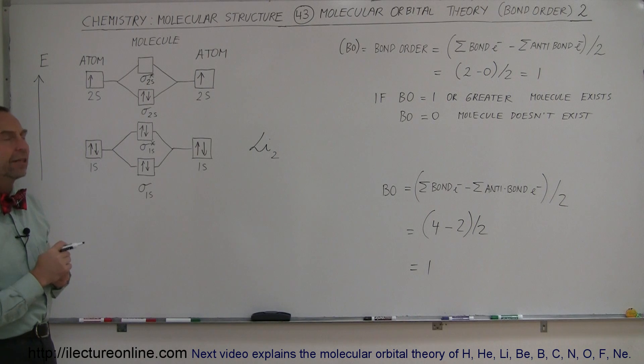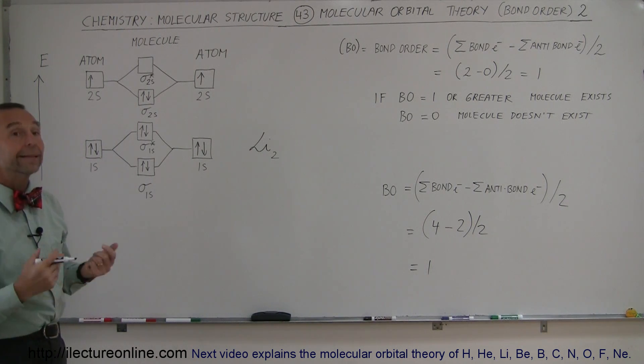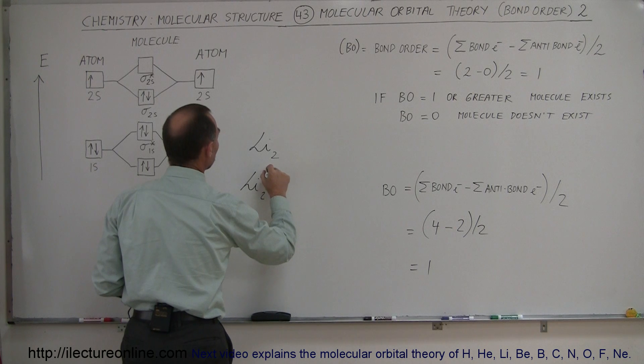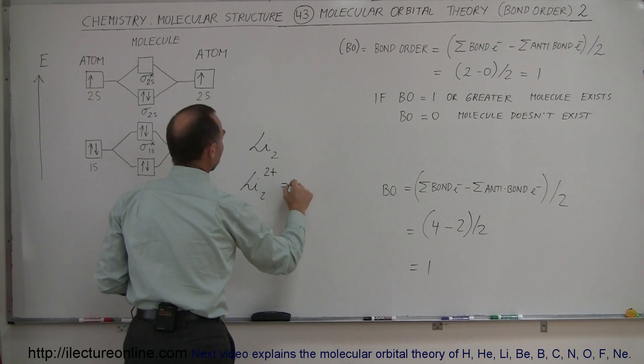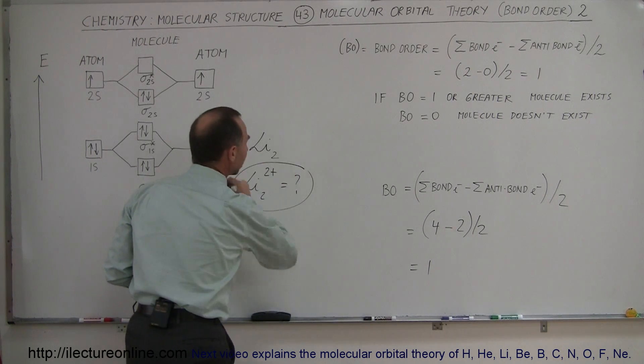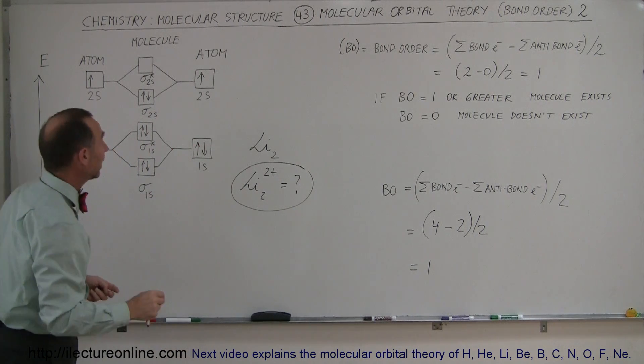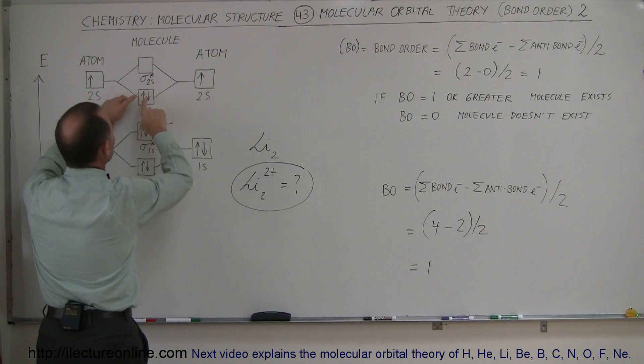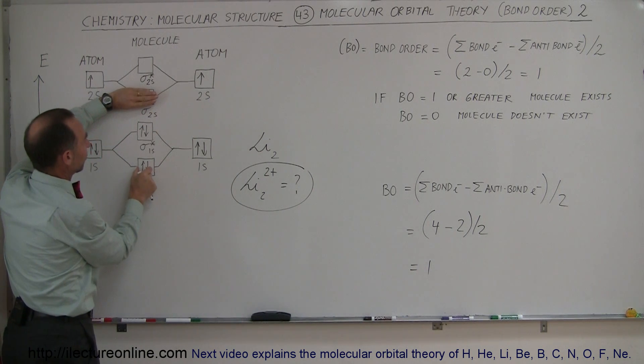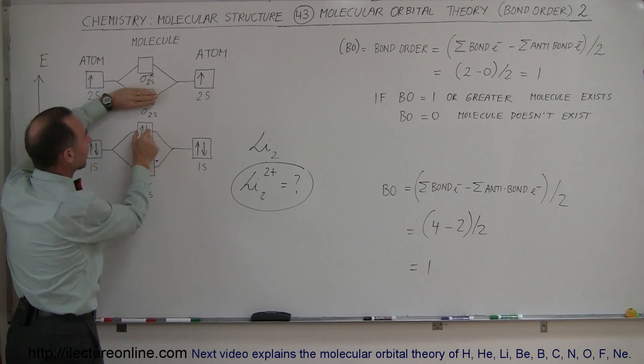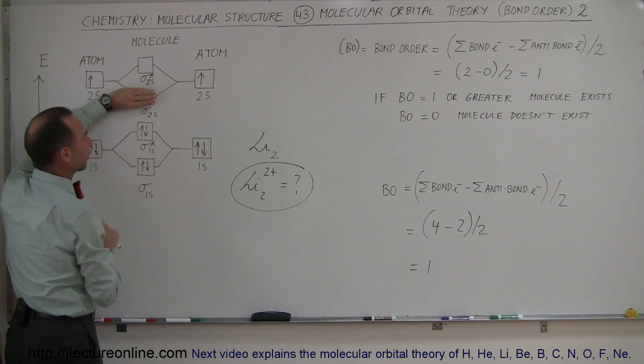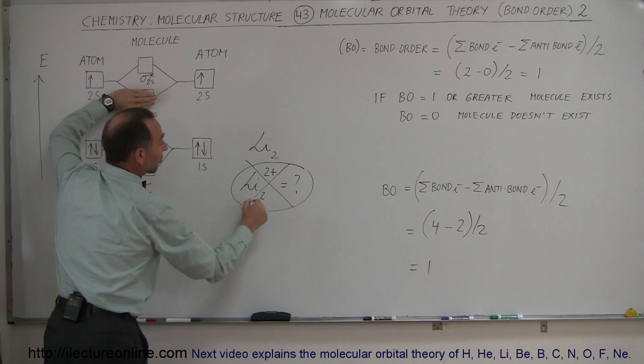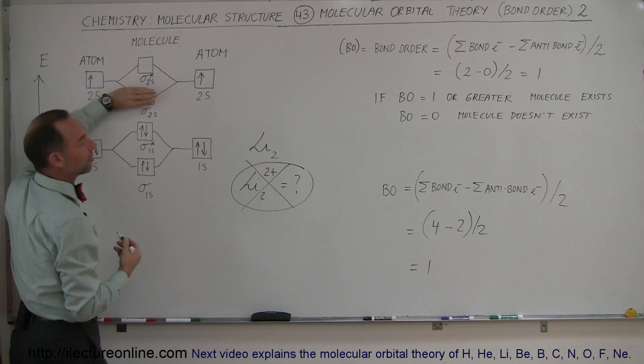Now, what if we have the lithium 2 plus ion? Can that exist? So the question would be now, if we have the lithium 2, 2 plus, is this a real thing? Can that really exist in nature? Well, if we take two electrons away, take these two electrons away, then these two electrons would disappear, and then we'd have the same number of electrons involved in bonding as anti-bonding. And then these repulsive forces would overwhelm the attractive forces and no, that molecule or that ion cannot exist, because in this case, the bond order would be zero.